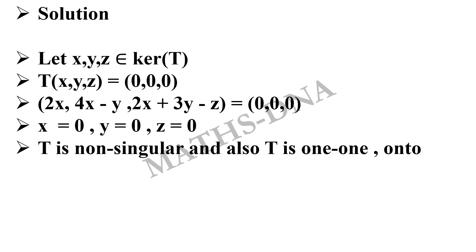This gives that T is non-singular because kernel is 0, and as T is non-singular, it is also one-to-one and onto. So, the correct answer is option D.